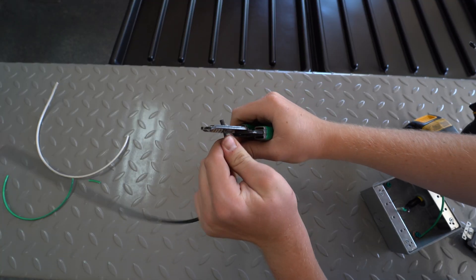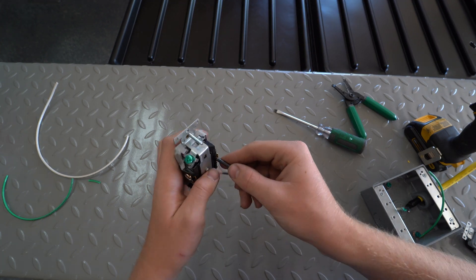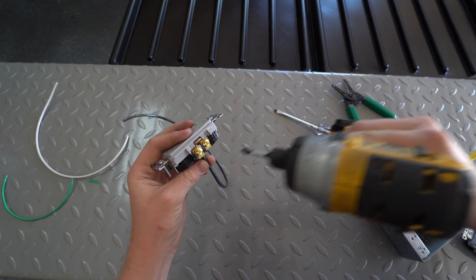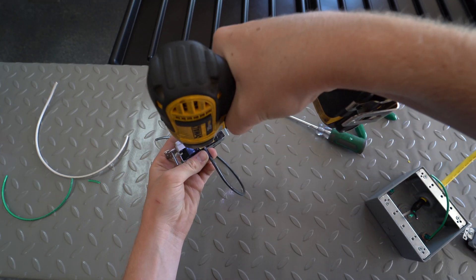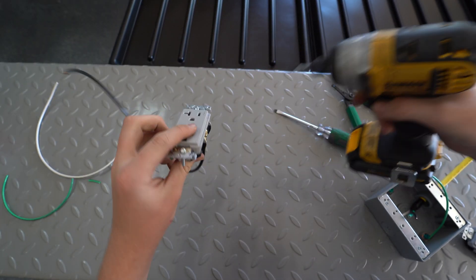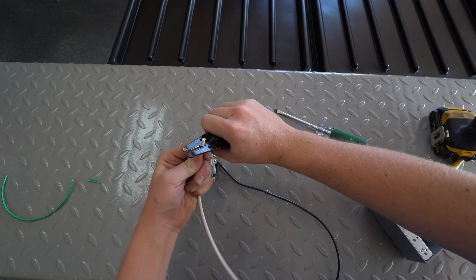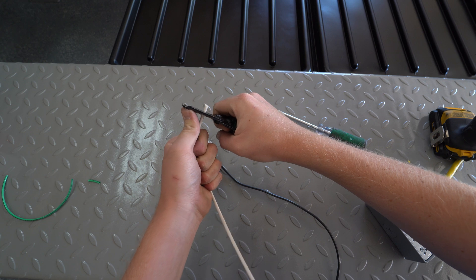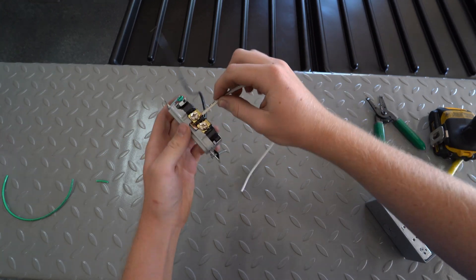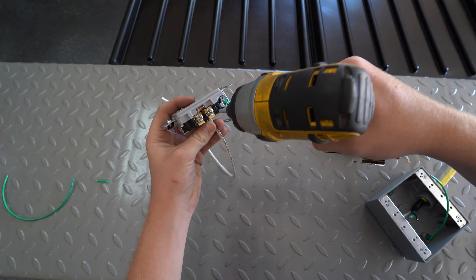Strip a short length of 10 gauge black wire. Insert the black wire into the brass screw on the outlet. Tighten the brass screw, then strip 10 gauge white wire. Insert the white wire into the neutral side of the outlet. Tighten the silver screw.